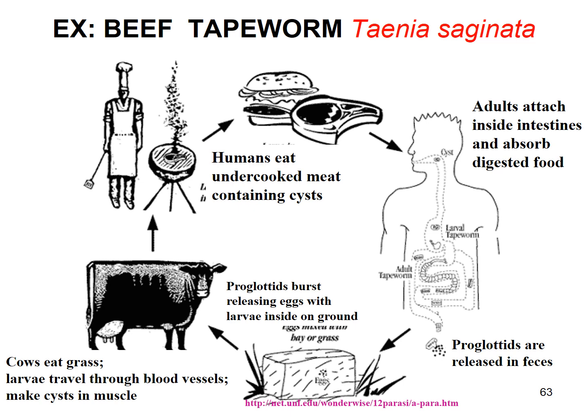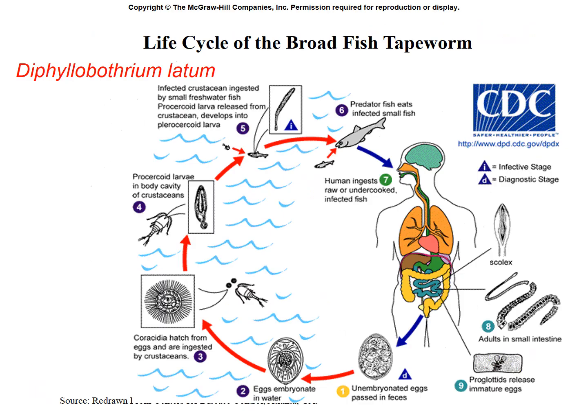The beef tapeworm: proglottids are released in human feces, somehow the cow eats grass that has the eggs, the eggs can survive quite a while, cysts form in the cow's muscle tissue, and if you don't cook your steak enough — like if you like it very rare — there's a chance you can ingest meat with these cysts. For the fish tapeworm: eggs shed in human feces get into water, infect a crustacean as intermediate host, cercariae develop into larvae, small fish eat the crustacean, bigger fish eat the small fish, and humans that eat undercooked fish can get infected.